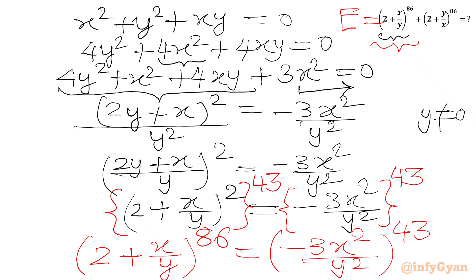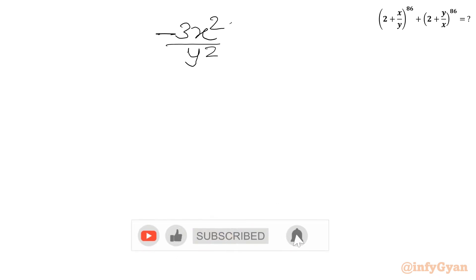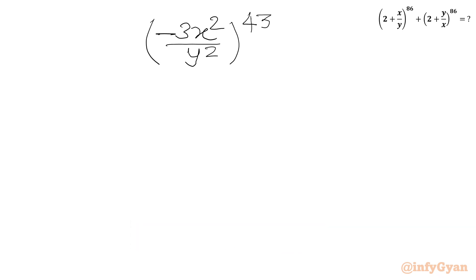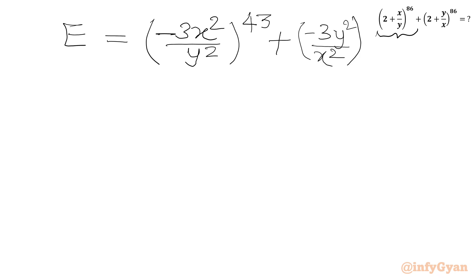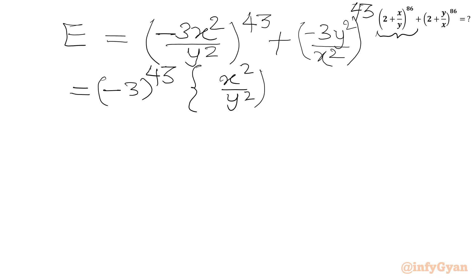Now we put the values into our required expression E. We can write E = (−3x²/y²)^43 + (−3y²/x²)^43. Factoring, we write (−3)^43 times [(x²/y²)^43 + (y²/x²)^43].